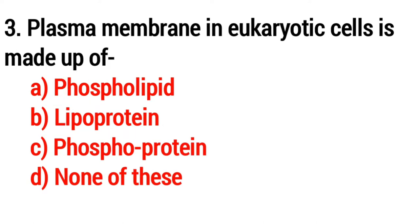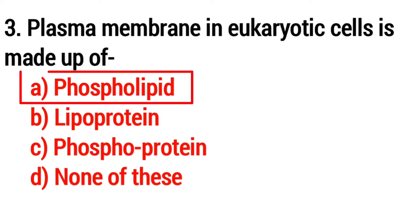Question number 3. Plasma membrane in eukaryotic cells is made up of? The answer is Option A, Phospholipid.